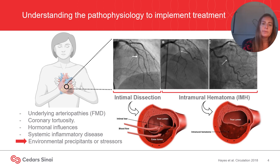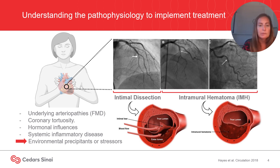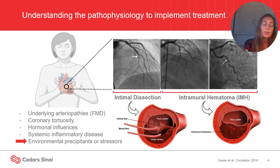The most common clinical presentation will be a young vulnerable woman presenting with chest pain. By 'vulnerable woman' I mean a woman with underlying diseases such as fibromuscular dysplasia, genetic factors, or hormonal influences such as pregnancy or hormonal replacement therapy, or with a systemic inflammatory disease. Most will have a potential trigger — the most commonly reported precipitants are extreme physical activity, more common in men, or emotional stress, more common in women.